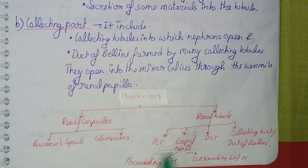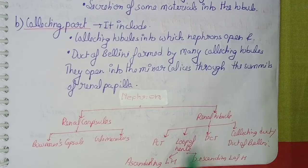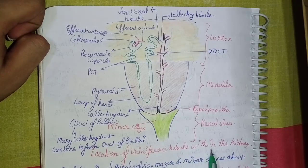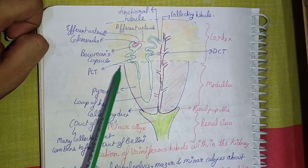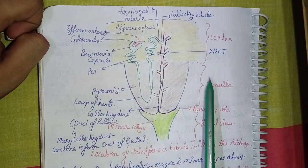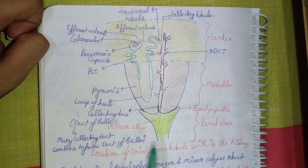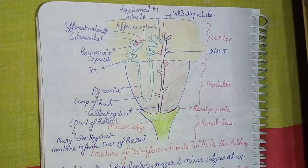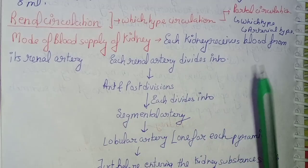The collecting part includes the collecting tubule into which the nephron opens. The duct of Bellini is formed by many collecting tubules and opens into the minor calyx through the summits of the renal papilla. The nephron consists of two parts: the renal capsule (Bowman's capsule and glomerulus) and the renal tubule (PCT, descending loop of Henle, ascending loop of Henle, DCT, and collecting duct or duct of Bellini). The total capacity of the renal pelvis, major and minor calyces is about 8 ml.